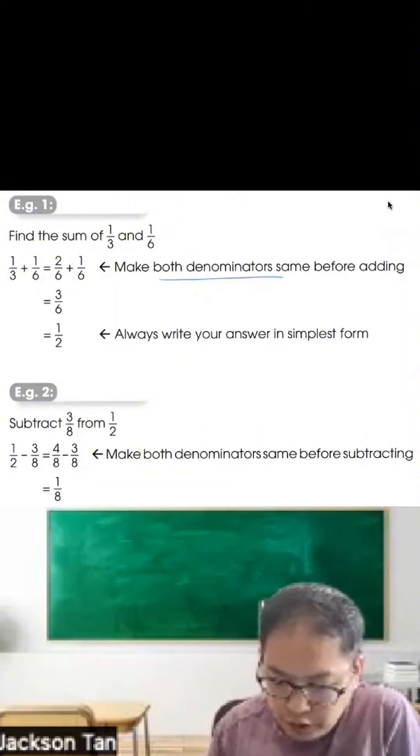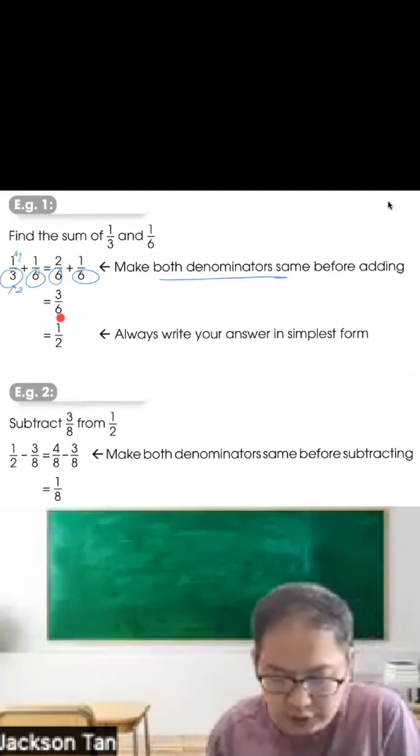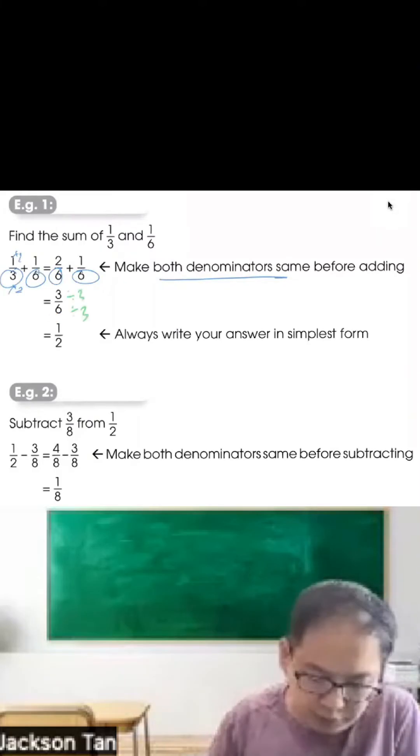So what you need to do, you make both denominators the same. So 3 and 6, common denominator is 6. How to get that? So you times 2, times 2. That's how you get 2 out of 6. Add together, 3 out of 6. Simplest form means you divide. So you can divide by 3, divide by 3. Then you get simplest form, 1 out of 2.